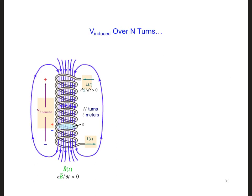So, if we sum up V-induced for one turn over all the turns of the coil, we're going to get the total induced V across the entire inductor. So, V-induced is N turns times V-induced for one turn. And this is equal to mu-naught N-squared A over L times DI DT.